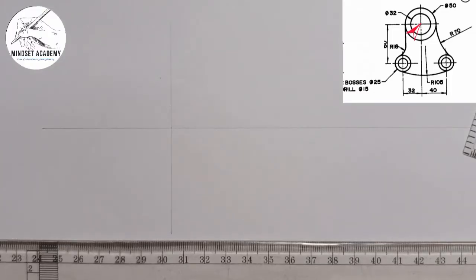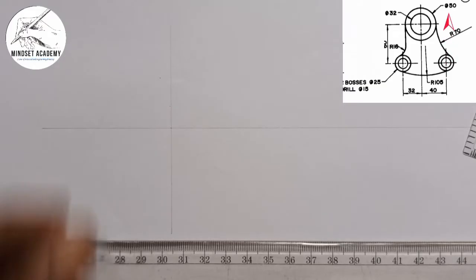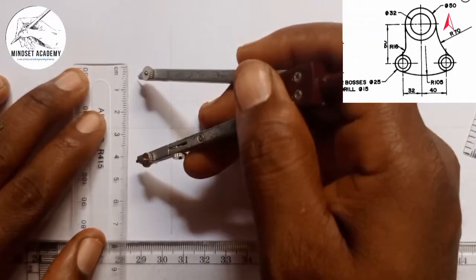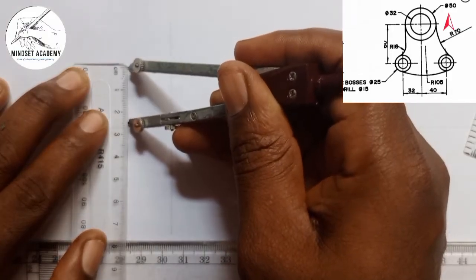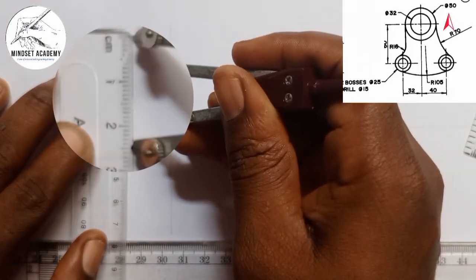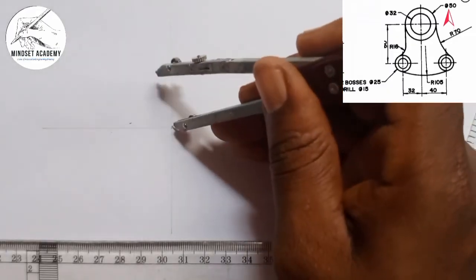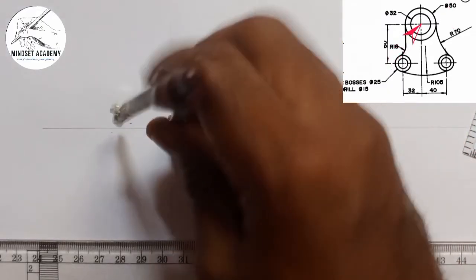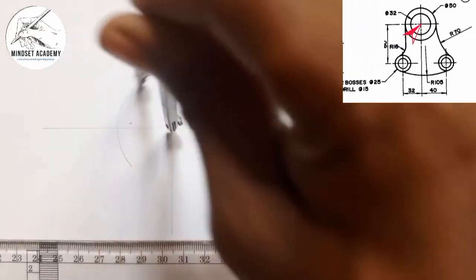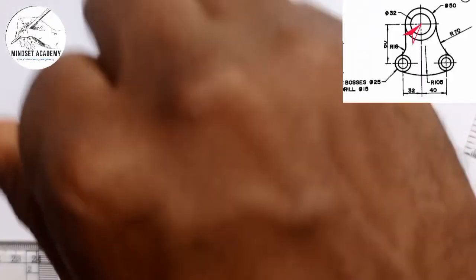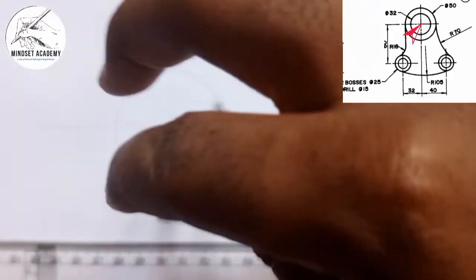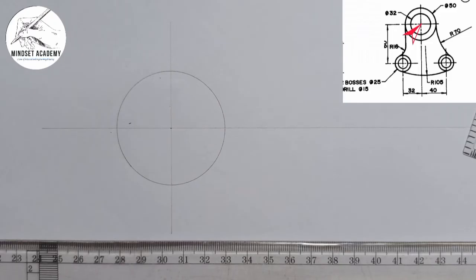Now the outer circle has a diameter of 50. So I am going to take half of 50, which is 25. I will measure 25 on my metal rule from 0 — this is 25 here. I will place it at the center and draw the major circle.